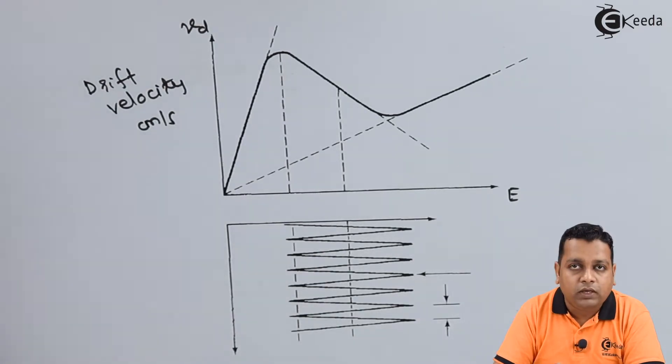The very important value of this drift velocity is 10 raised to power 7 centimeters per second. This has decided most of the classification with respect to the modes, whether it is transit time gun mode, delayed mode, quenched mode, or the LSA mode that has the higher value of velocity.